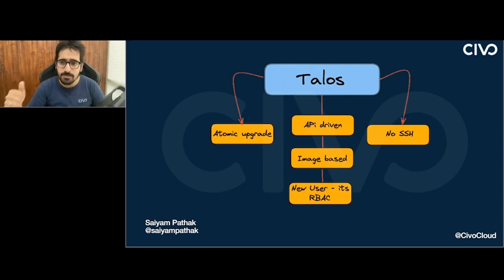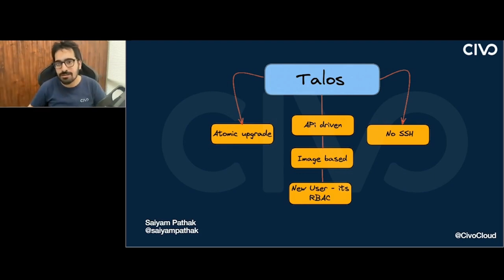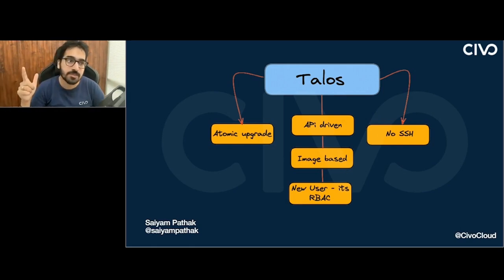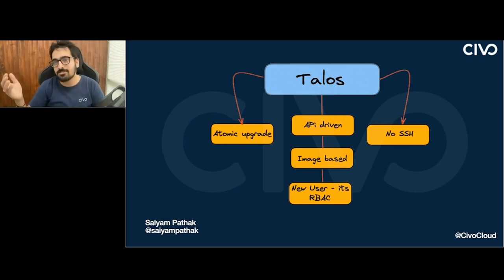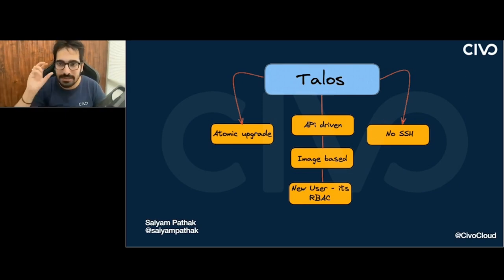Talos was built from scratch — everything API-driven with no SSH, atomic upgrades, and a clean vanilla Kubernetes installation that is conformant. Its sole purpose is to give you a Kubernetes machine. Just enough binaries, just enough helper utilities, just enough libraries, just enough directories that should be on an OS to run Kubernetes — and you don't have any SSH. That's a big, game-changing security power that Talos brings directly to the table.